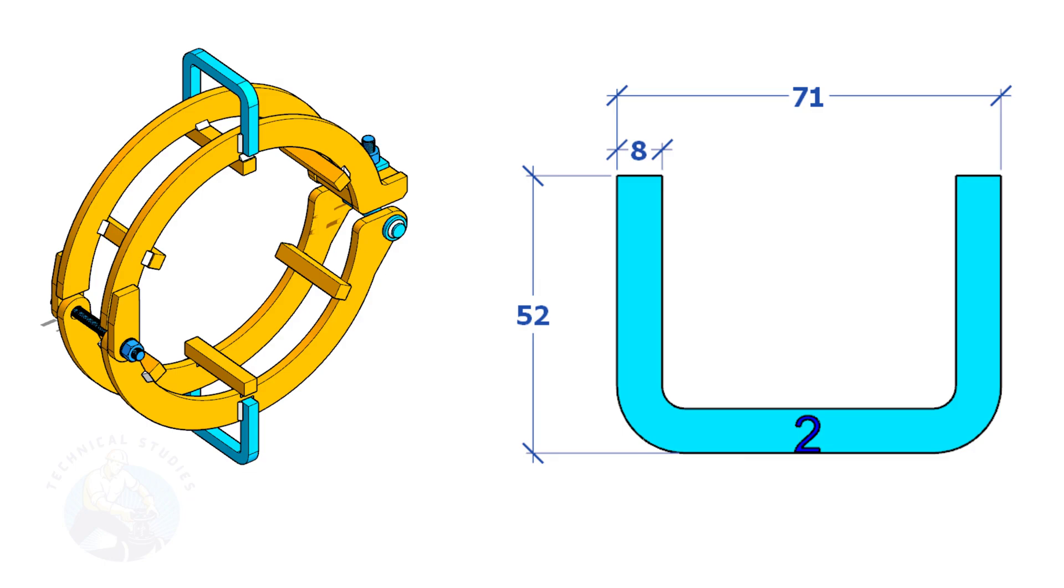For item number two, you can use square bar, round bar, or whatever material suitable for a handle. The size shall be 6 millimeters to 10 millimeters. Up to 6-inch clamps, one handle is enough.